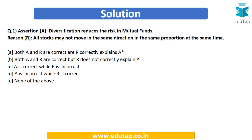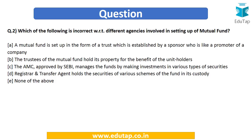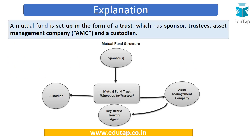The second question asks: which of the following is incorrect with regard to the different agencies involved in setting up a mutual fund? The options are: (A) a mutual fund is set up in the form of a trust established by a sponsor who is like a promoter; (B) trustees hold its property for the benefit of unit holders; (C) the AMC approved by SEBI manages the funds by making investments; (D) the registrar and transfer agent holds the securities in its custody; or (E) none of the above.